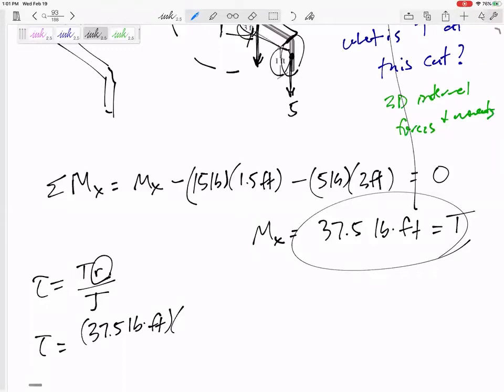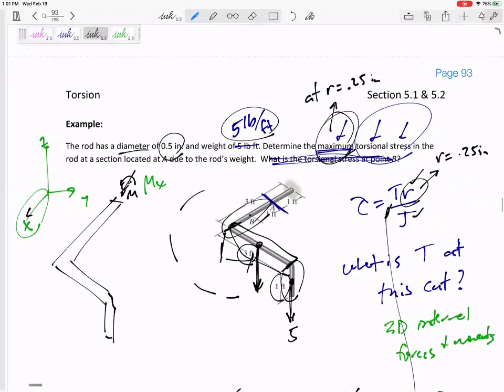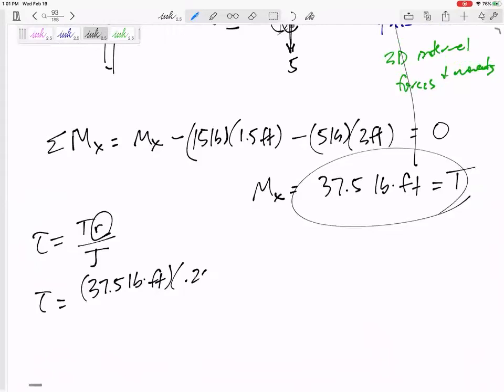So that r, if the rod has a diameter of 0.5 inches, be careful - the radius is 0.25 inches. Let me look at my units here because I've got, looks like feet and inches, might have to reconcile those.